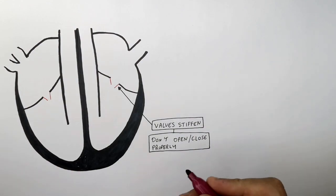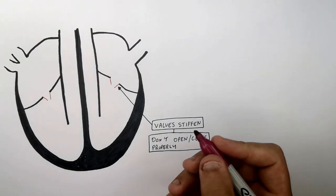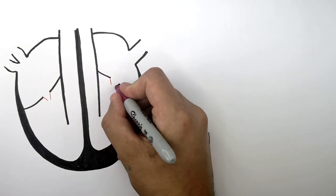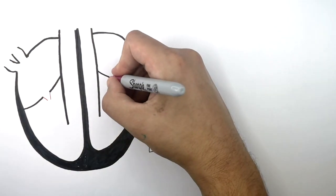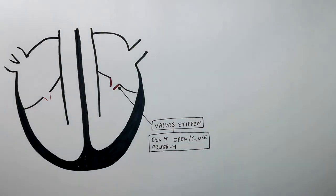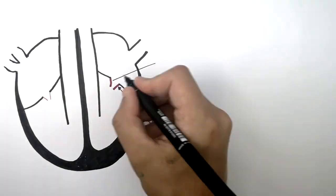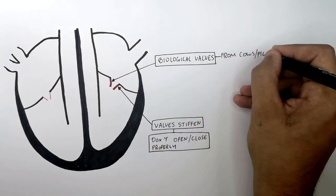So instead of having their entire heart replaced with a heart transplant or even an artificial heart, they can have a valve transplant, which is still invasive surgery, but it's much less invasive than replacing the whole heart. So you can use biological valves from cows or pigs.